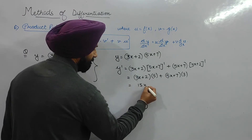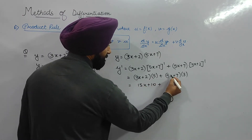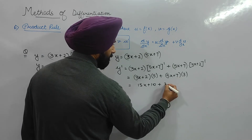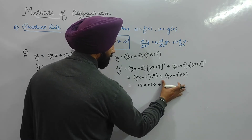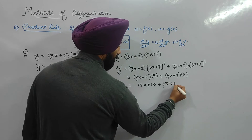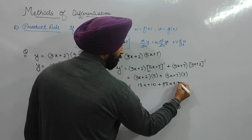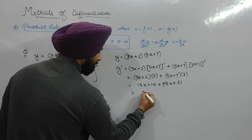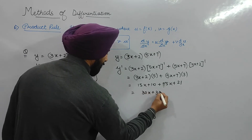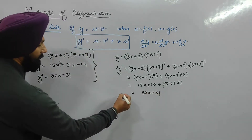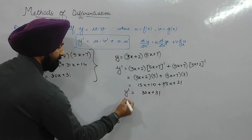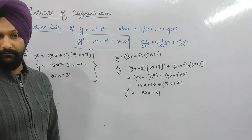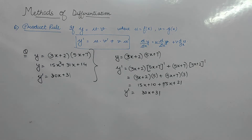Working out the arithmetic: 5 times 3x is 15x, plus 10; and 7 times 5 is 35, 3 times 5 is 15, 8 times 2 is not needed — the result comes out to be 30x + 31. That is my derivative by both methods, confirming the product rule.